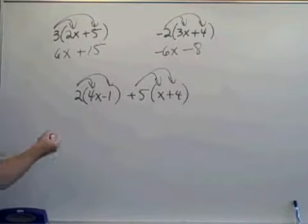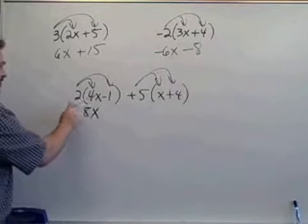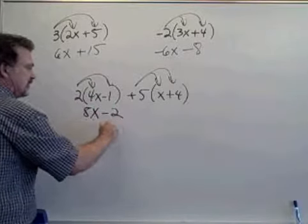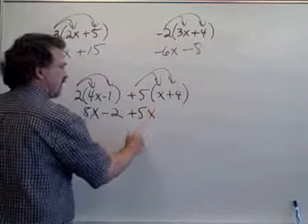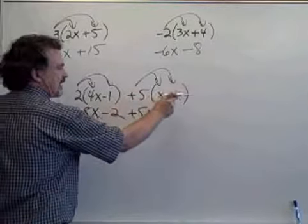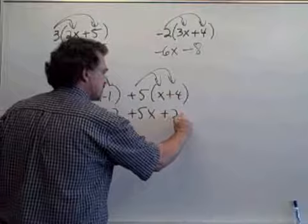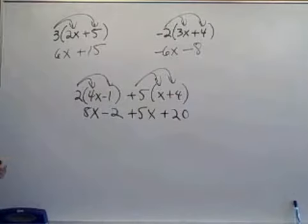2 times 4x gives us 8x. 2 times minus 1 is minus 2. A plus 5 times x is plus 5x. A plus 5 times a plus 4 is plus 20. And we have simplified that expression by removing the parentheses that were there.